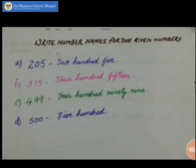Let's read the spelling also. 205 — the number name: T-W-O H-U-N-D-R-E-D F-I-V-E. Now like that you are going to write number names for these numbers. The second one is 315.